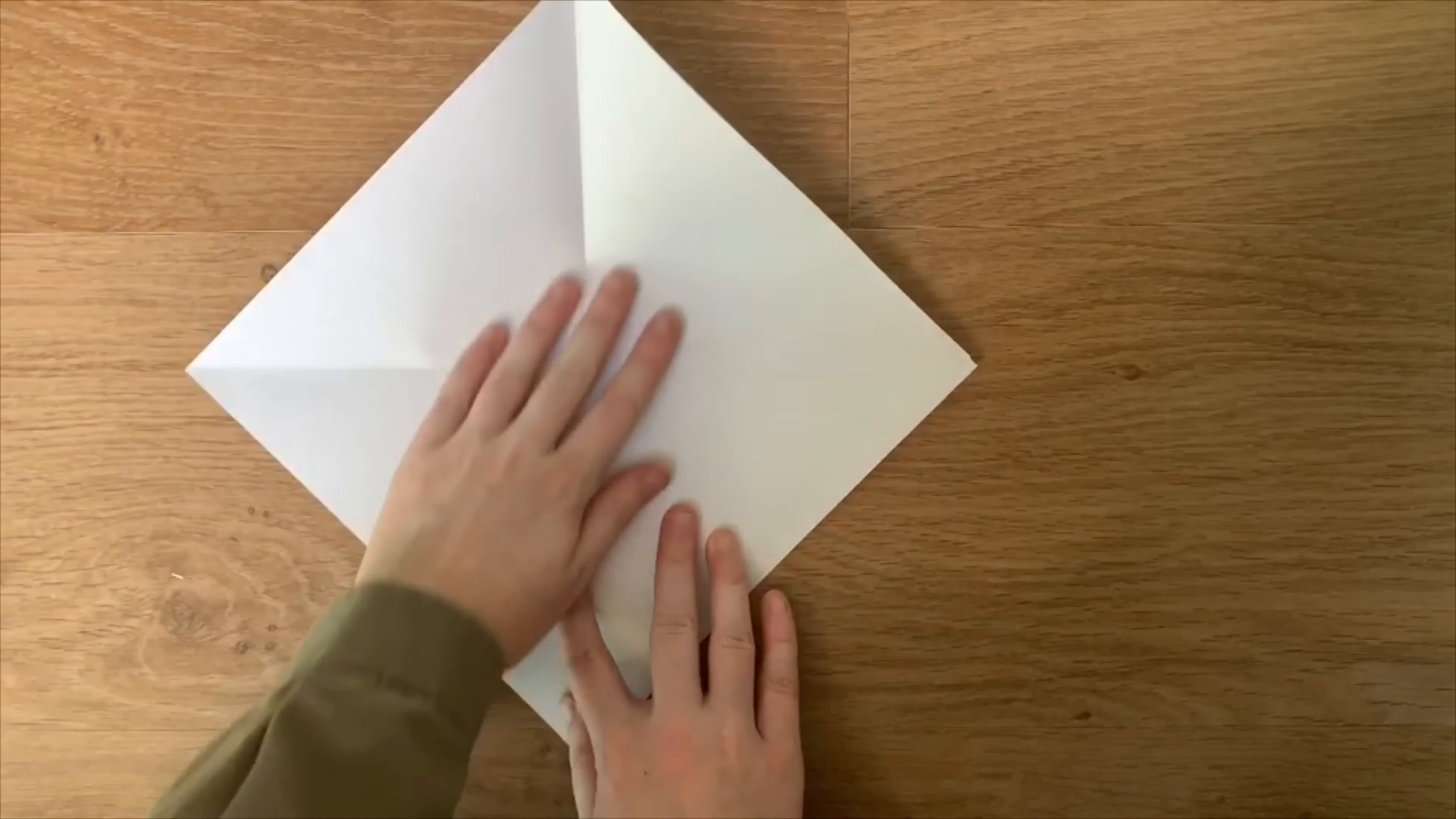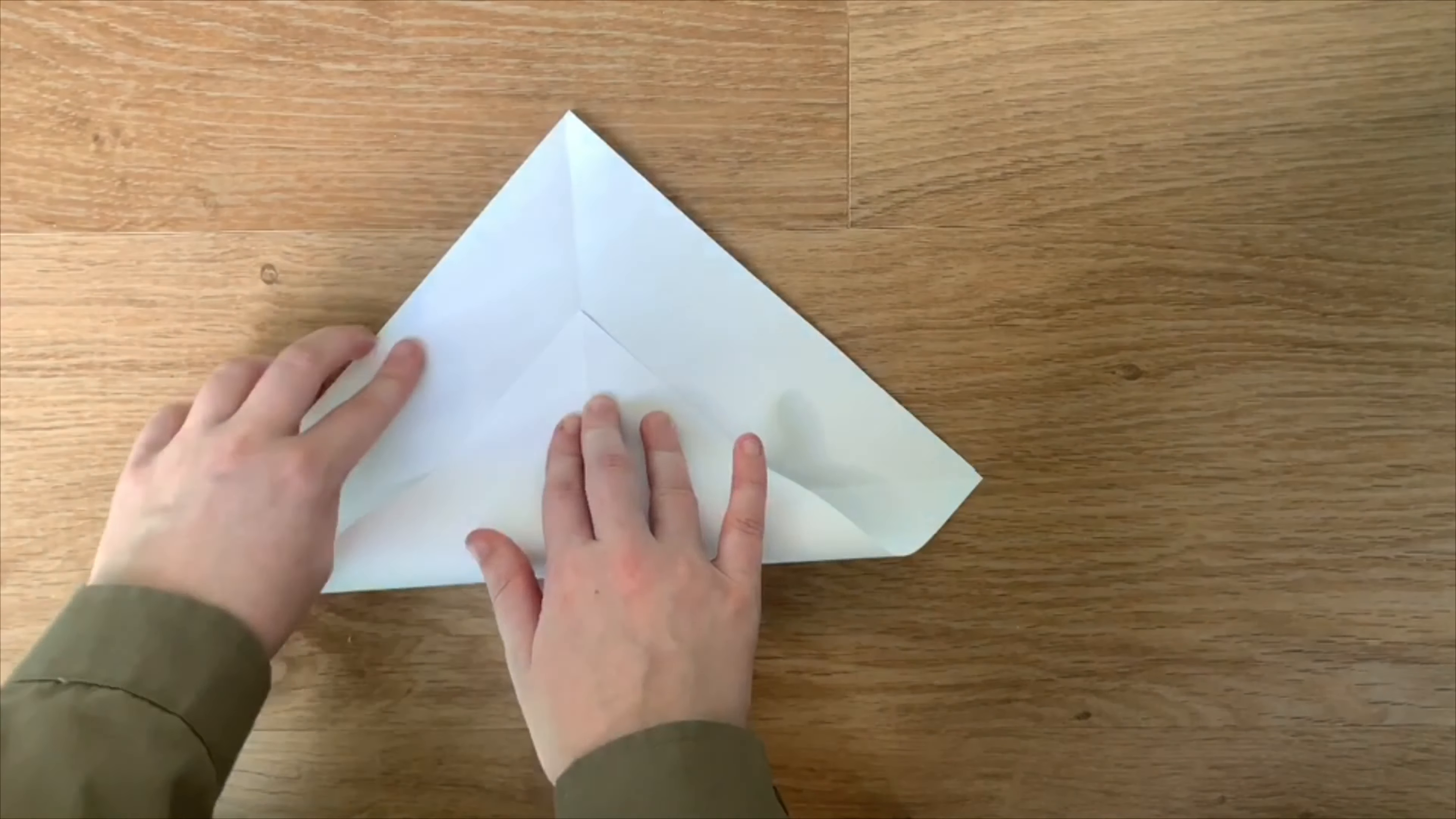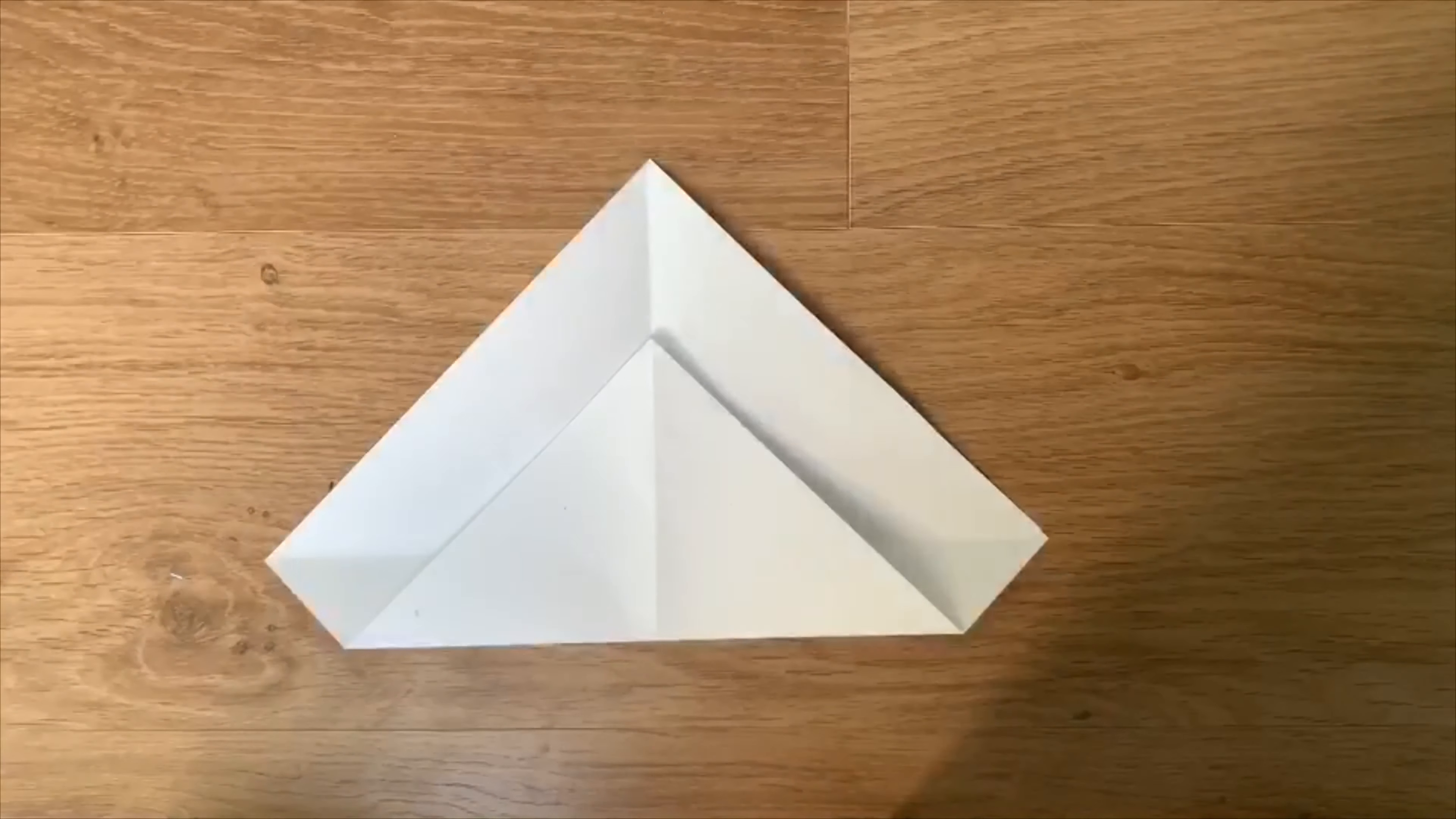Once you've done that, turn it so instead of being a square it's a diamond. Take your bottom corner and fold it up so it's about halfway between the center and the top. Just like this.